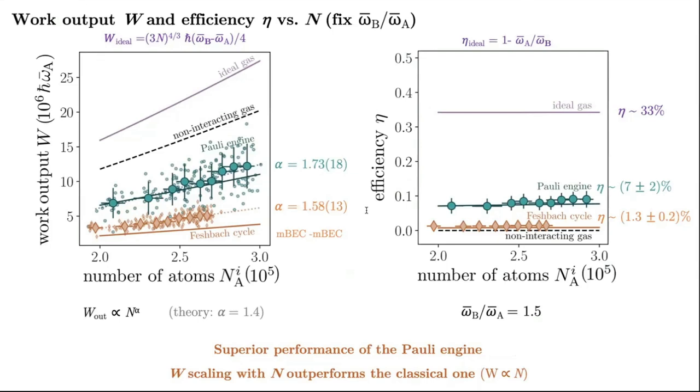Some more things here. We calculate the scaling of the work output with respect to the number of particles. For both engines, we have a scaling that is higher than the classical one. And, we could also compute a bound for the work output and for the efficiency that are these purple ones, and are given by what we would obtain if we were really able to turn n ideal fermions into n over 2 ideal bosons.